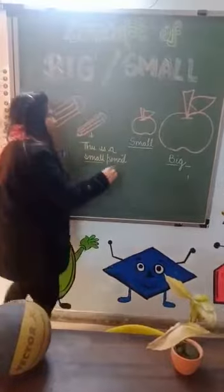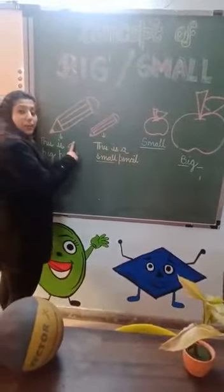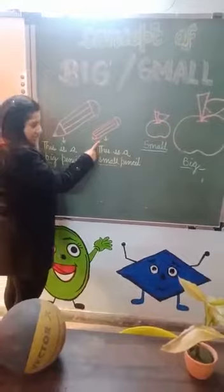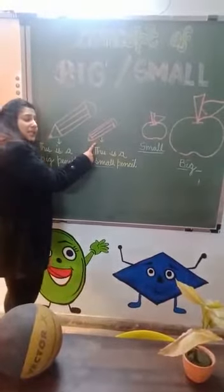Okay kids, look at the flat board. This is a big pencil. This is a small pencil.